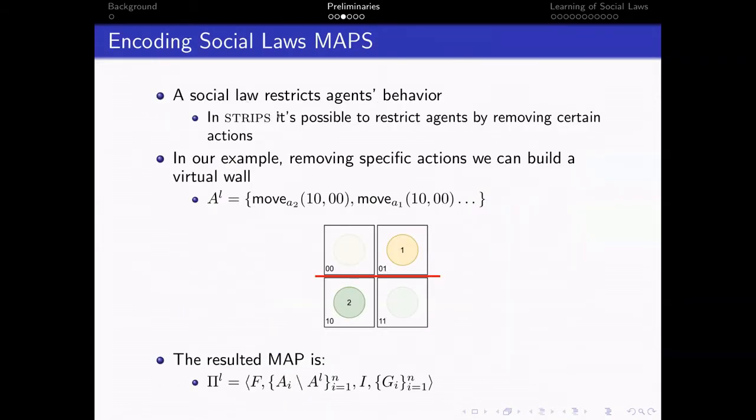As we said, a social law restricts agent behavior. And this is possible in STRIPS by removing, I mean deleting certain actions. In our example, for instance, removing specific actions leads to basically building a virtual wall between the two agents such that they can't interrupt with each other. And the resulted planning problem is the same planning problem without the specific actions that were deleted by the social law.